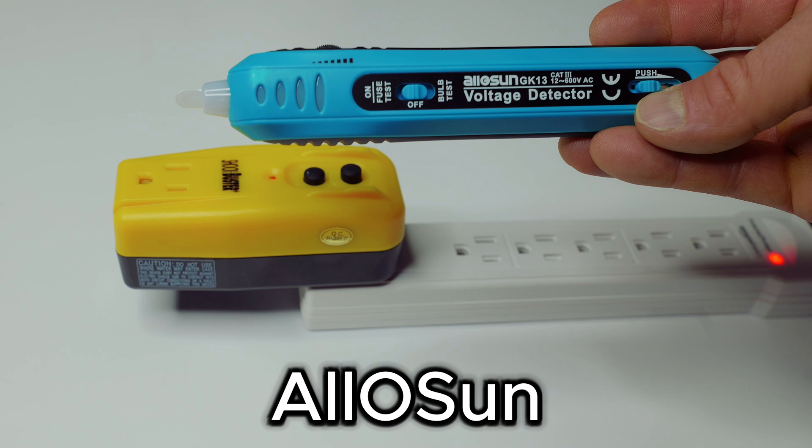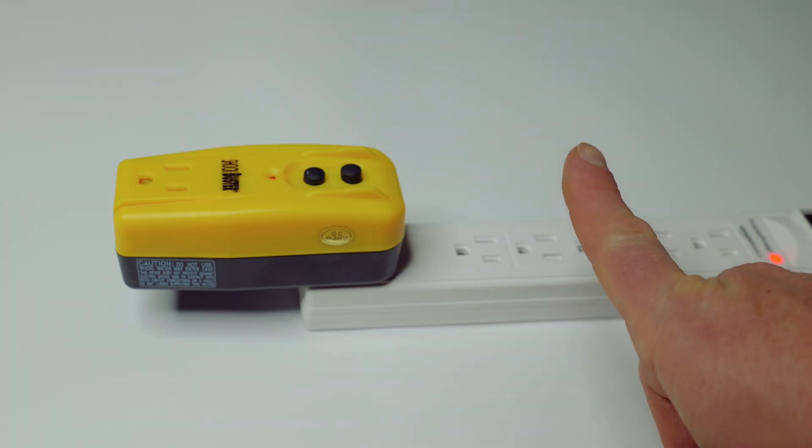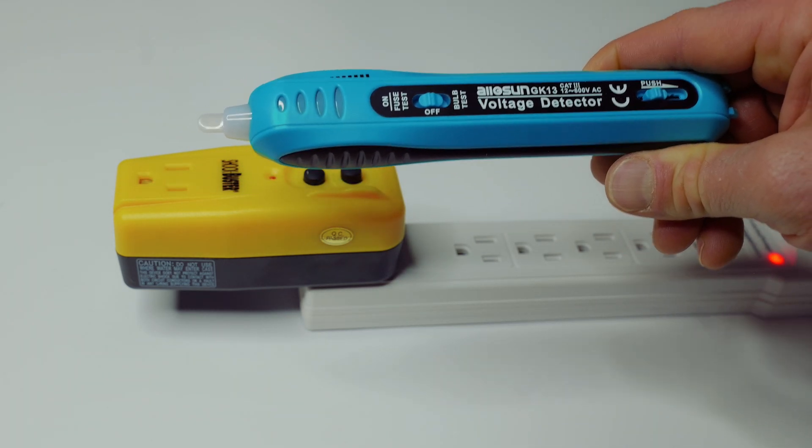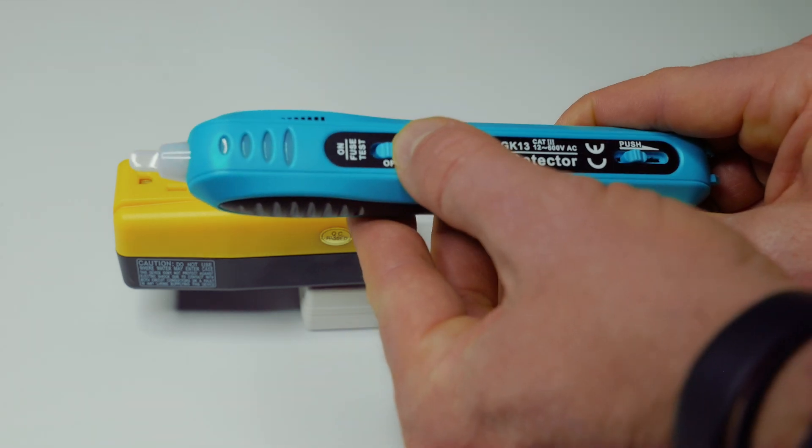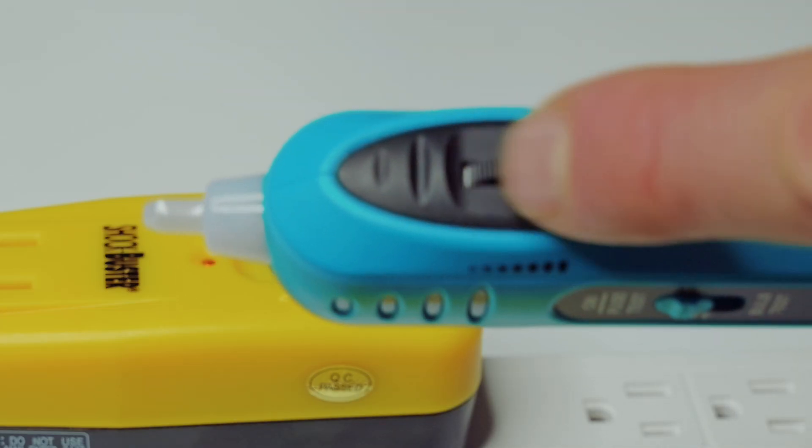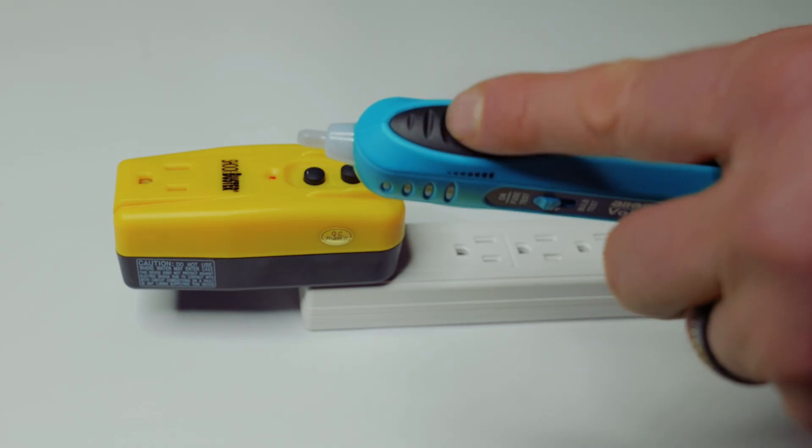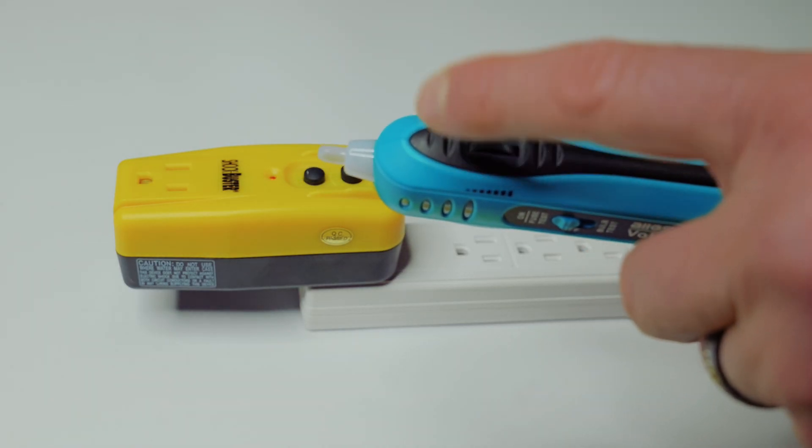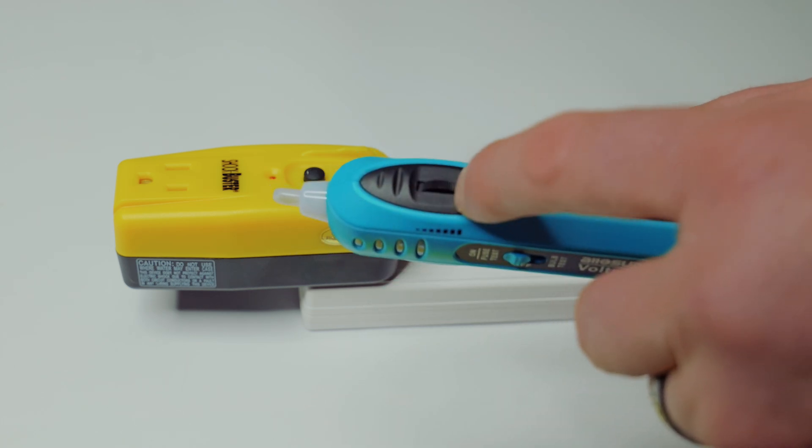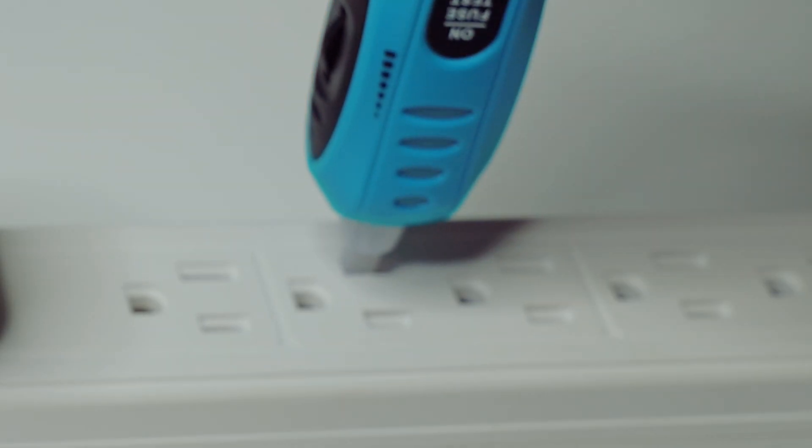Next up we have the All of Sun voltage tester. Now I featured this in a Christmas lights test. If you haven't seen that watch the video right here. But today I'm strictly going to be using the non-contact voltage tester voltage detector. Now to do that I'm going to go ahead and put it up into the fuse test. The interesting thing with the All of Sun is it does have this dial right here and that allows you to adjust the sensitivity. Now while that's good it can also not be good because you could accidentally leave this in the all the way off sensitivity and I'm going to show you the dangers of that right here.